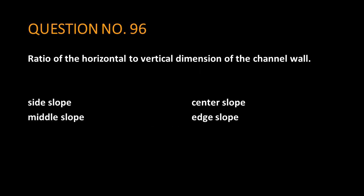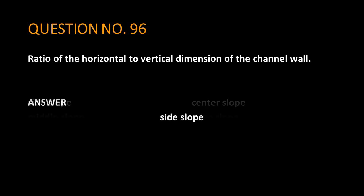Question No. 96. Ratio of the horizontal to vertical dimension of the channel wall. The answer is side slope.